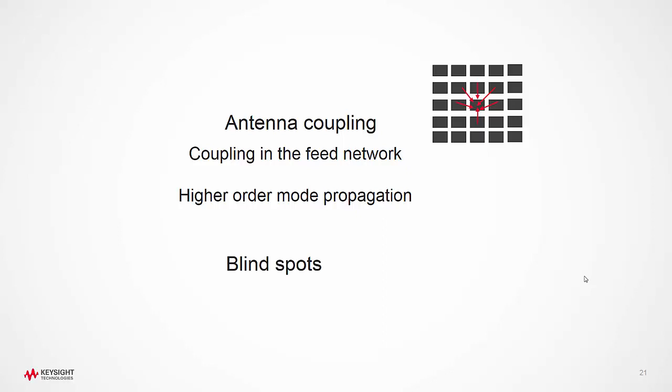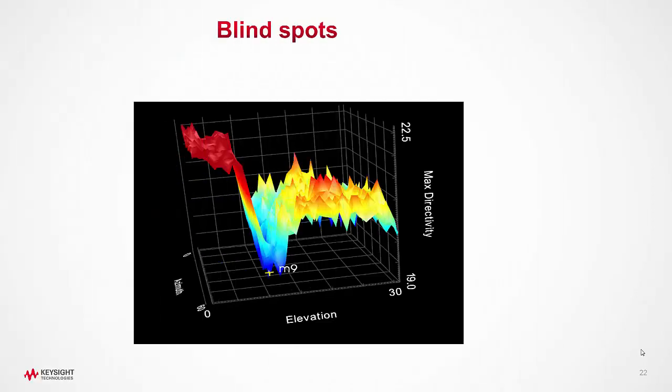All these effects can cause loss of directivity in certain directions called blind angles. Unless one models the coupling effects and impedance mismatches accurately and explores the design over all scan angles, these blind spots cannot be uncovered. A typical simulation shows a mild form of loss of directivity shown in the figure.